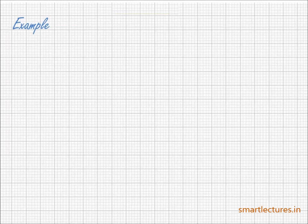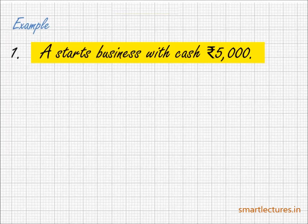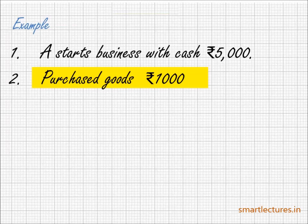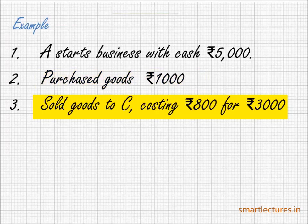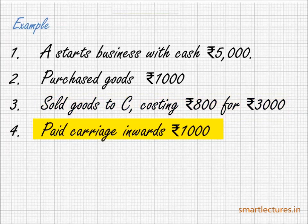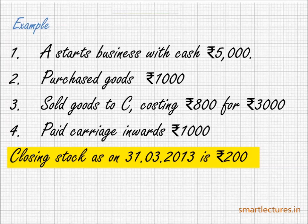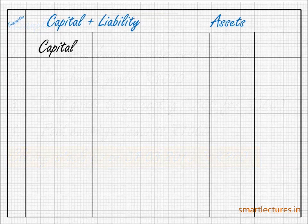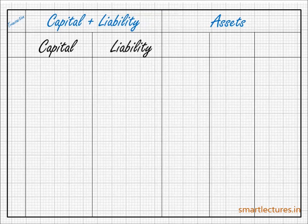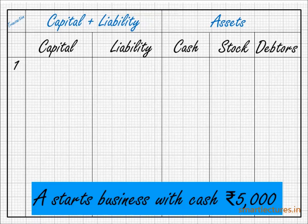Let's do one more practical question. We have to create an accounting equation, so let's draw the format. On the left side, one column is for capital and then liabilities; on the asset side, I am going to create three columns: one for cash, one for stock, and one for debtors. Transaction number one: A starts business with cash Rs. 5000. So, capital 5000, cash 5000, and stock 1000.